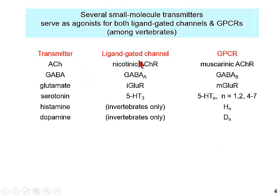Acetylcholine activates nicotinic acetylcholine receptors as well as muscarinic. GABA activates receptors cleverly called GABA-A and GABA-B: GABA-A are ligand-gated channels, GABA-B are GPCRs. Glutamate has a slightly different terminology: there are ionotropic glutamate receptors — the AMPA, kainate, and NMDA receptors — and the metabotropic G-protein-coupled receptors, simply called mGluRs.